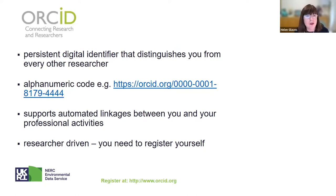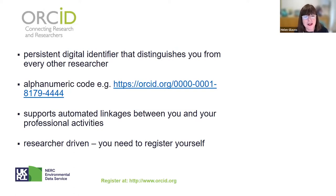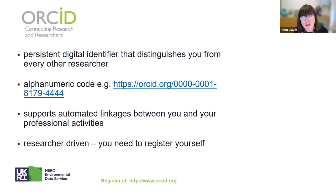ORCID is a persistent digital identifier that distinguishes you from every other researcher. It's an alphanumeric code that supports automatic linkages between you and your professional activities. ORCID is researcher-driven — you need to register yourself. There is currently no mechanism for bulk registration of teams or members of staff within an organization, so it's important to register yourself if you want to be linked to your research outputs.